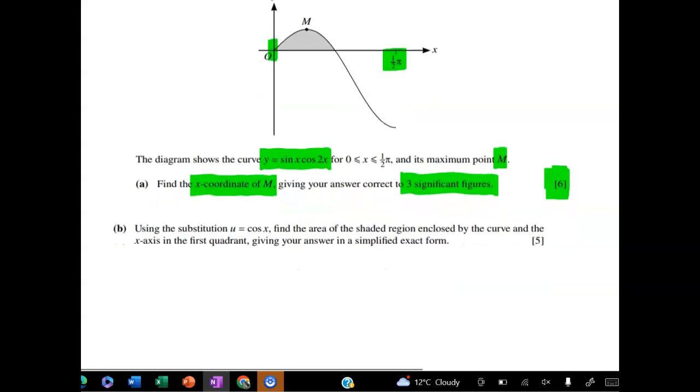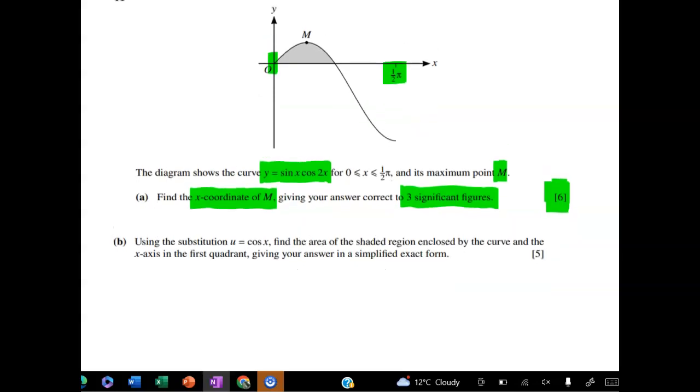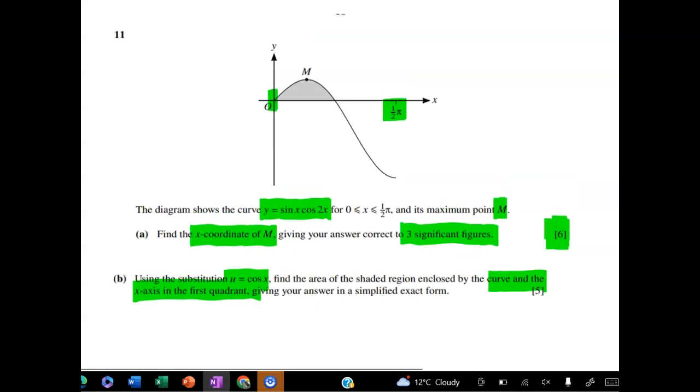Then the second part is five marks, and it says to use the substitution u equals cos x to find the area of the shaded region enclosed by the curve and the x-axis in the first quadrant. So the first question that we're going to have to figure out is what is the limit of integration here? We have to give our answer in a simplified exact form. So it definitely felt to me like the first six marks were pretty easy. The last five, you have to do a bit of work for them.